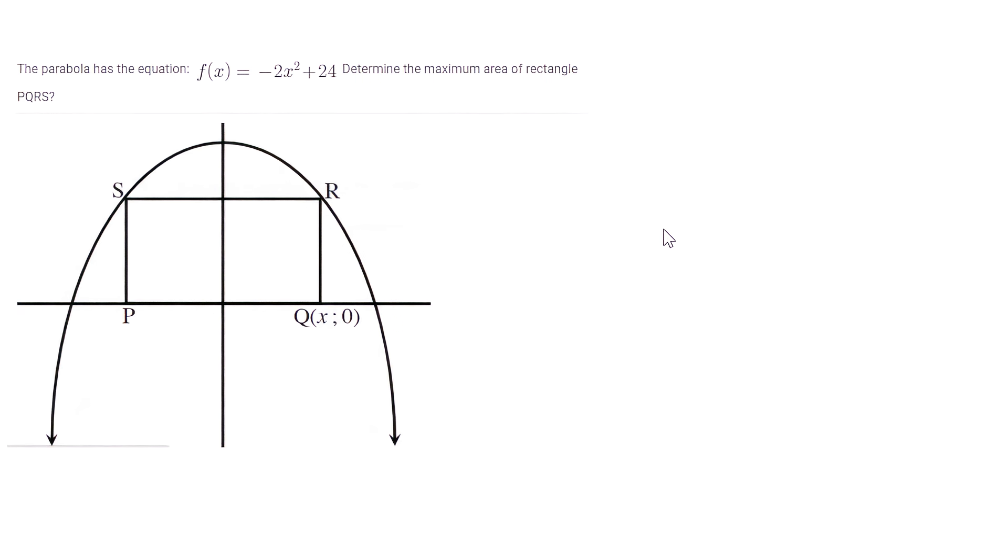Now we know that the area of a rectangle would be this length multiplied by this length. We know that the coordinates here would obviously be 0 and 0, and they've told us that Q is x and 0. So then what would this length over here be? Well, it's x, right? And we can assume that this would also be x over here. So the length of PQ is definitely going to be 2x.